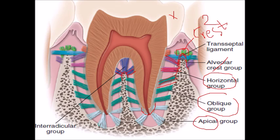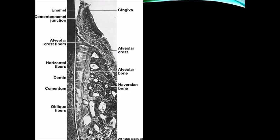Some fibers run from the cementum of one tooth to the cementum of another tooth without passing through or contacting the bone — these fibers are called transseptal fibers. They are not part of the periodontal ligament fibers. In this section, you can identify the alveolar crest, then the alveolar crest group of fibers running obliquely upward, then the horizontal group, then the oblique group below, and near the apex the apical group.